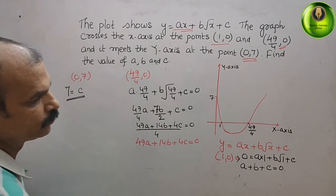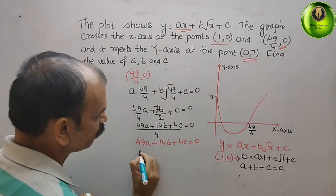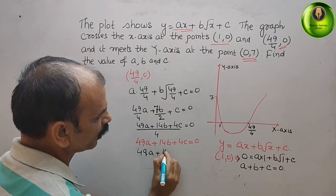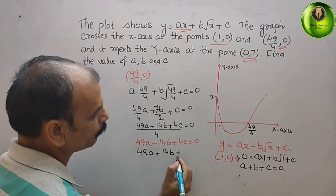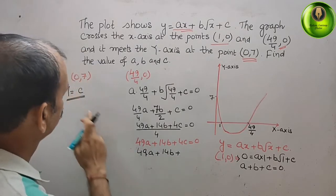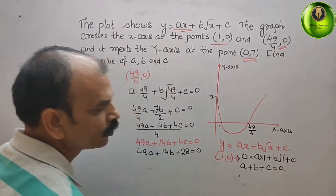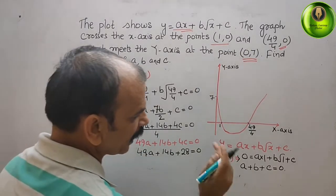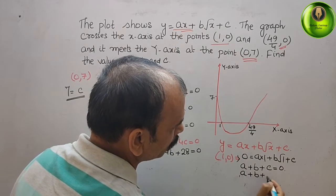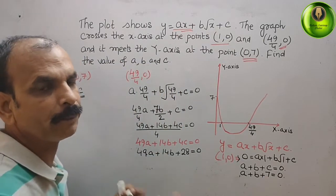Substituting c = 7 into both equations. In equation 2: 49a + 14b + 4(7) = 0, giving 49a + 14b + 28 = 0. In equation 1: a + b + 7 = 0, giving a + b = -7. We now have two equations in a and b.